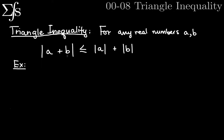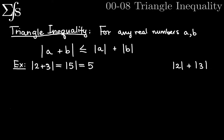Let's take particular numbers for A and B. Let's say the absolute value of 2 plus 3. That's going to be equal to the absolute value of 5, which is equal to just 5. So that's the left side of this inequality. On the right side, the absolute value of 2 plus the absolute value of 3 is equal to 2 plus 3, which is 5. So we get both sides are equal.